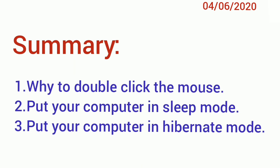Let's do a quick summarization of what we learned today. We learned about why to double click the mouse and how to change double click into single click. We also learned how to put our computer in sleep mode. Sleep is a power saving state wherein a computer does not turn off completely. The monitor and hard disk are turned off, but the computer saves your work and settings in RAM and draws a small amount of power, allowing a computer to quickly resume full power operation when you start working again.